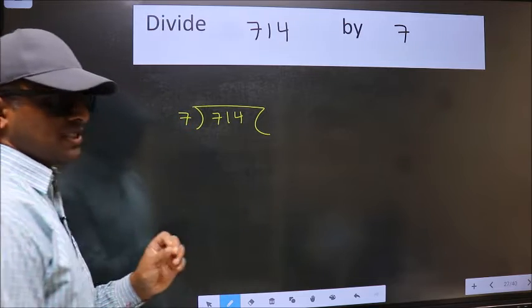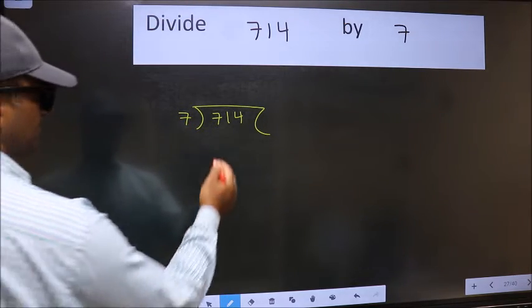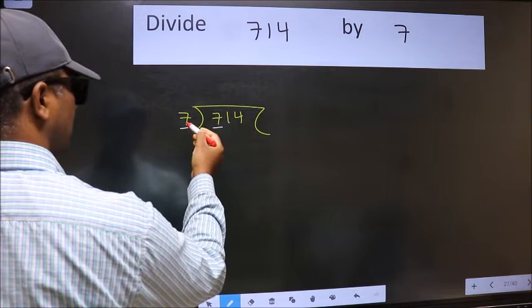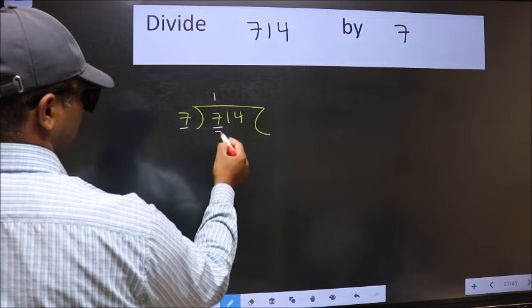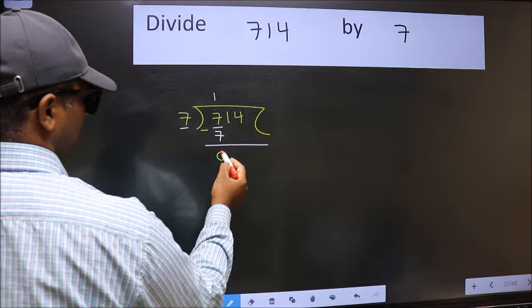This is your step 1. Next. Here we have 7 and here 7. When do we get 7 in 7 table? 7 once 7. Now we should subtract. We get 0.